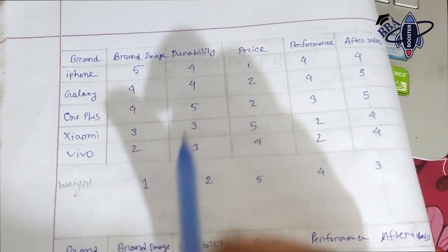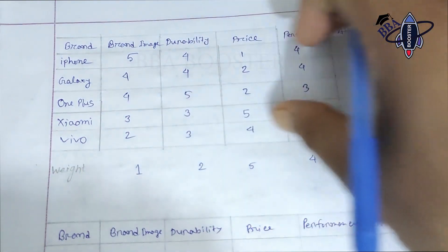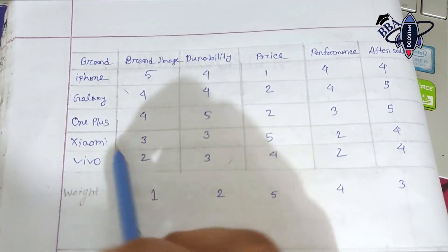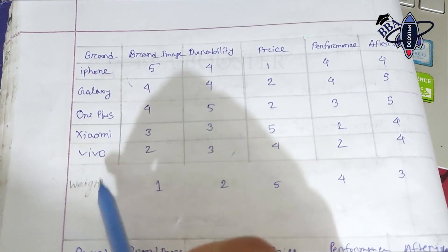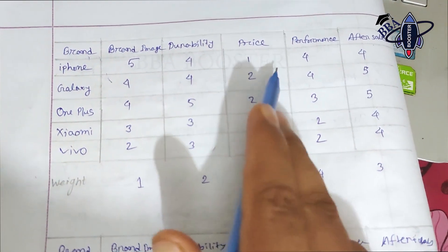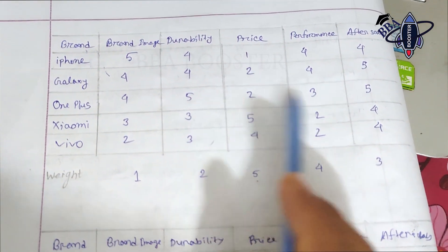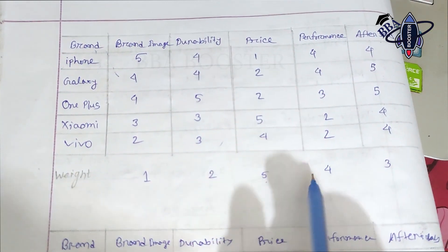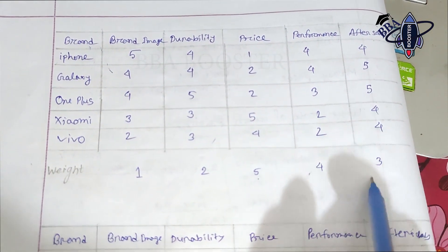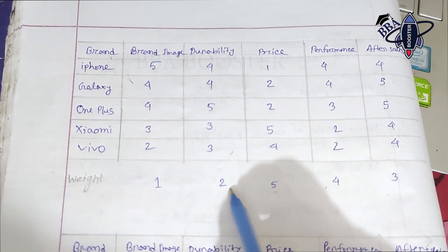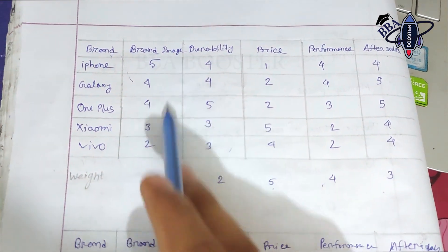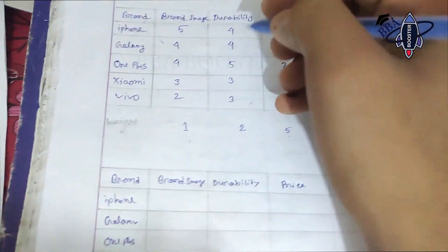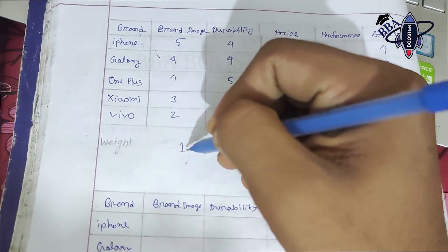So let's recap the weights assigned to each feature: price is 5, performance is 4, after-sales is 3, durability is 2, and brand image is 1. These weights reflect the importance consumers place on each attribute.